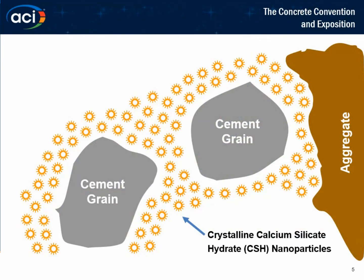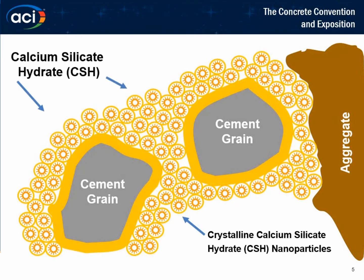As you saw in the video, the CSH nanoparticles in this liquid admixture facilitate the growth of CSH crystals in between the cement grains, improving the overall hydration of general Portland cement. In this pictorial representation on screen, you see a brown aggregate — essentially a sand grain — adjacent to two gray cement grains. These CSH nanoparticles are very small, shown in gold, and they bridge the gap between those cement grains. When introduced into a concrete mixture, millions of these nanoparticles serve as nucleation points for additional CSH crystal growth, both on the cement grains themselves and in between them.